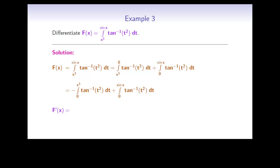Applying the chain rule, f prime of x equals negative arctan(x⁶) times (x³)', plus arctan(sin²x) times (sin x)'. Computing these derivatives gives negative arctan(x⁶) times 3x² plus arctan(sin²x) times cos x.